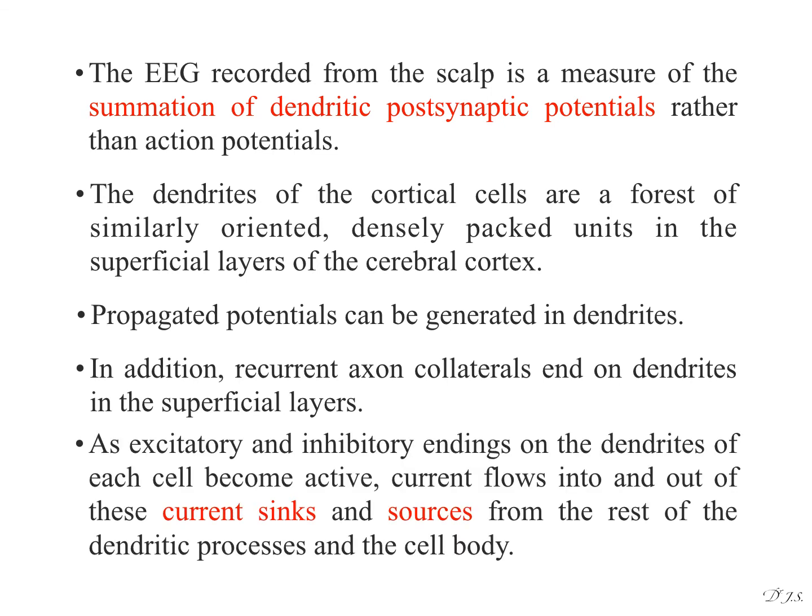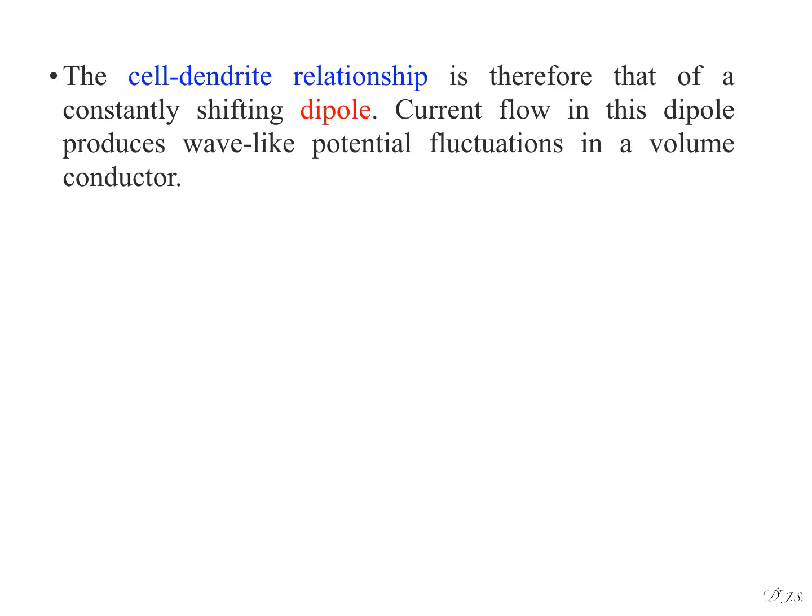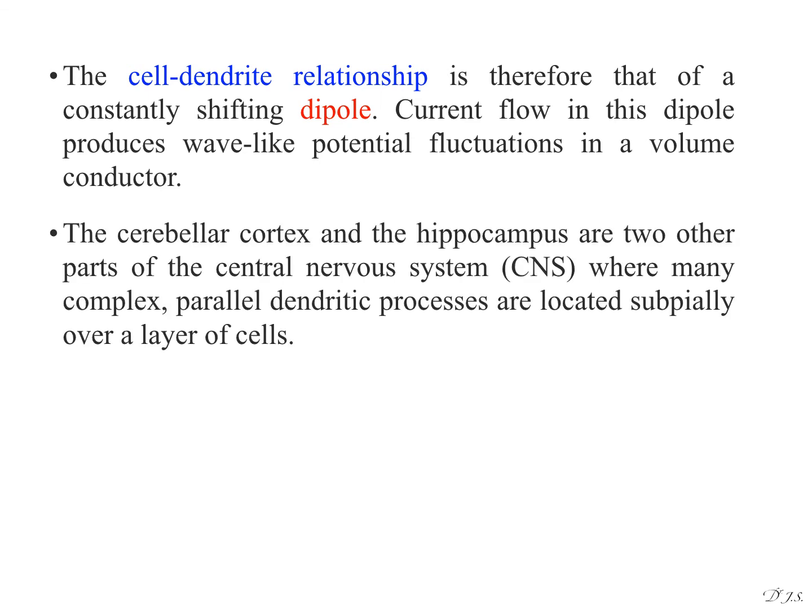As excitatory and inhibitory endings on the dendrites of each cell become active, current flows into and out of these current sinks and sources from the rest of the dendritic processes and the cell body. The cell dendrite relationship is therefore that of a constantly shifting dipole. Current flow in this dipole produces wave-like potential fluctuations in a volume conductor.